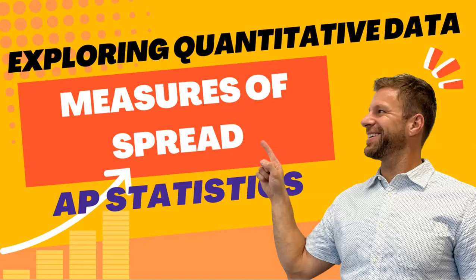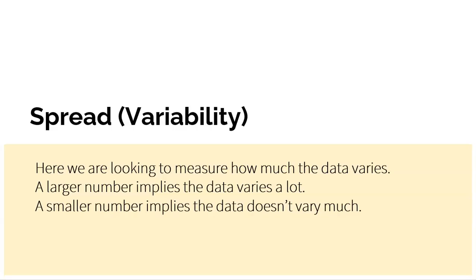Welcome to AP Statistics. In this video, we're going to continue exploring quantitative data by looking at measures of spread. Spread is variability — how your data varies. The only way your data won't vary is if every single value in your data set is the same; then you literally have zero variability. Otherwise, you're probably going to have some type of spread or variability to your data.